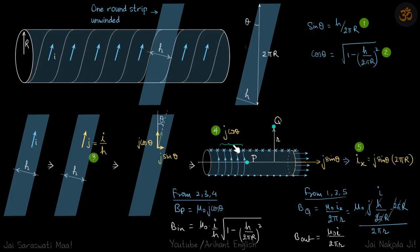If you want to find the field inside, we can find by replacing j by j cos θ. So B inside is μ₀ times j cos θ at this point p which is inside the solenoid. j we can write as i/h and cos θ we can write as this value, so we get our answer. This is B inside.